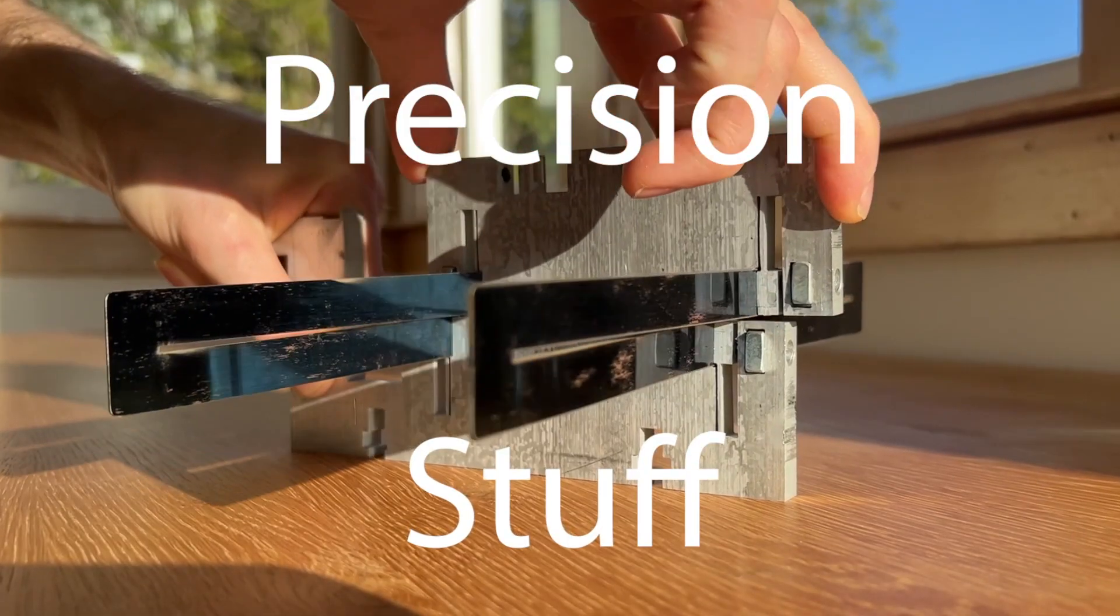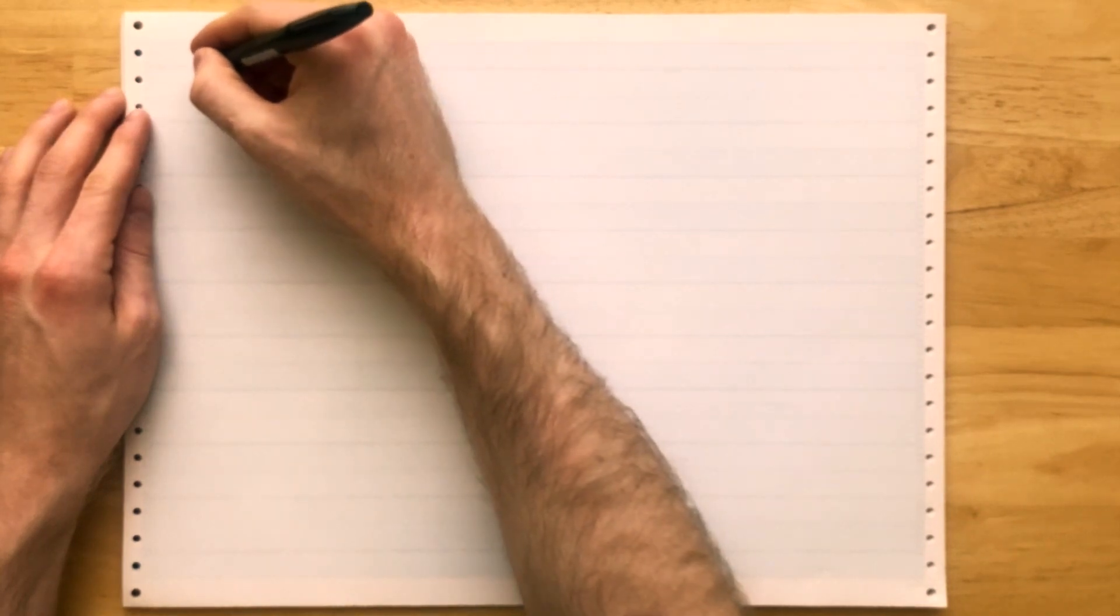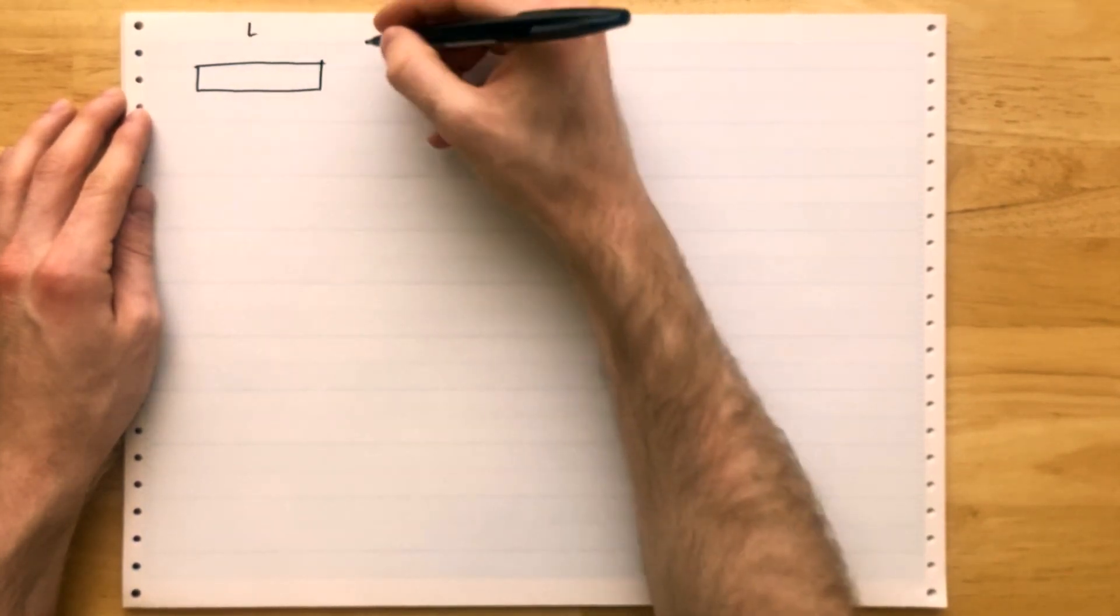This is Precision Stuff, and today we're going to be talking about motor shaft sizing. Let's consider a shaft. It has a length L and a diameter D.